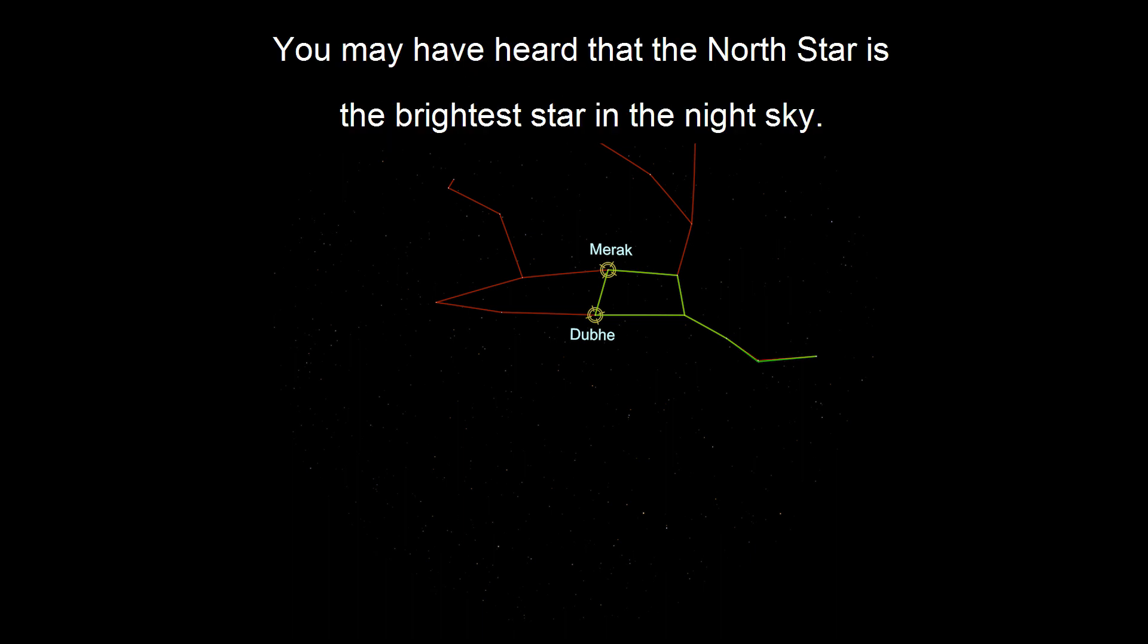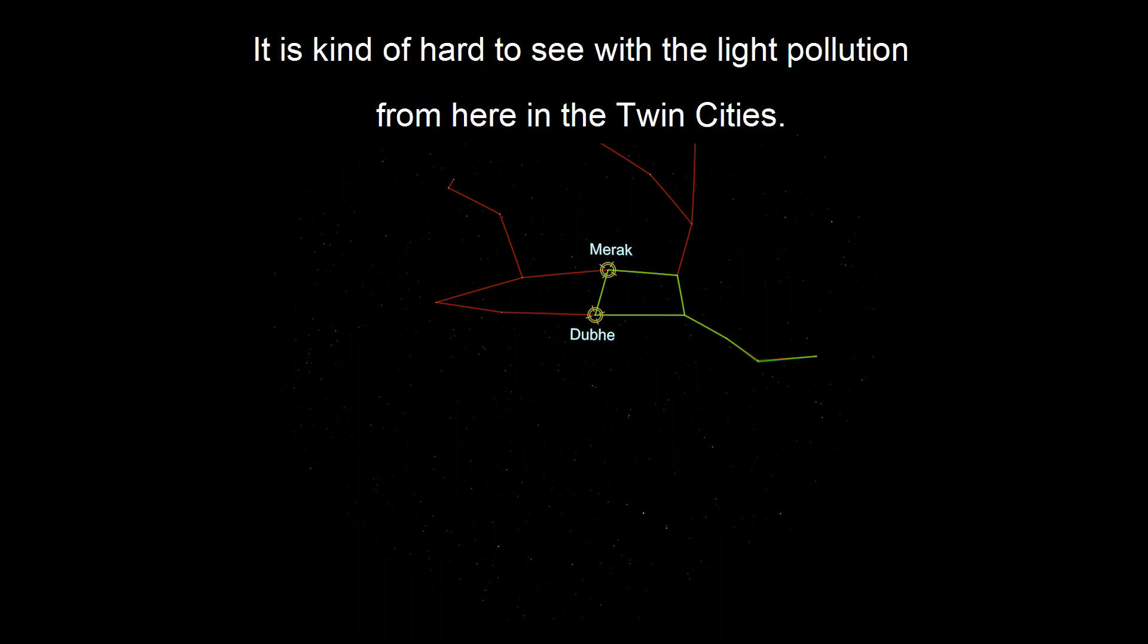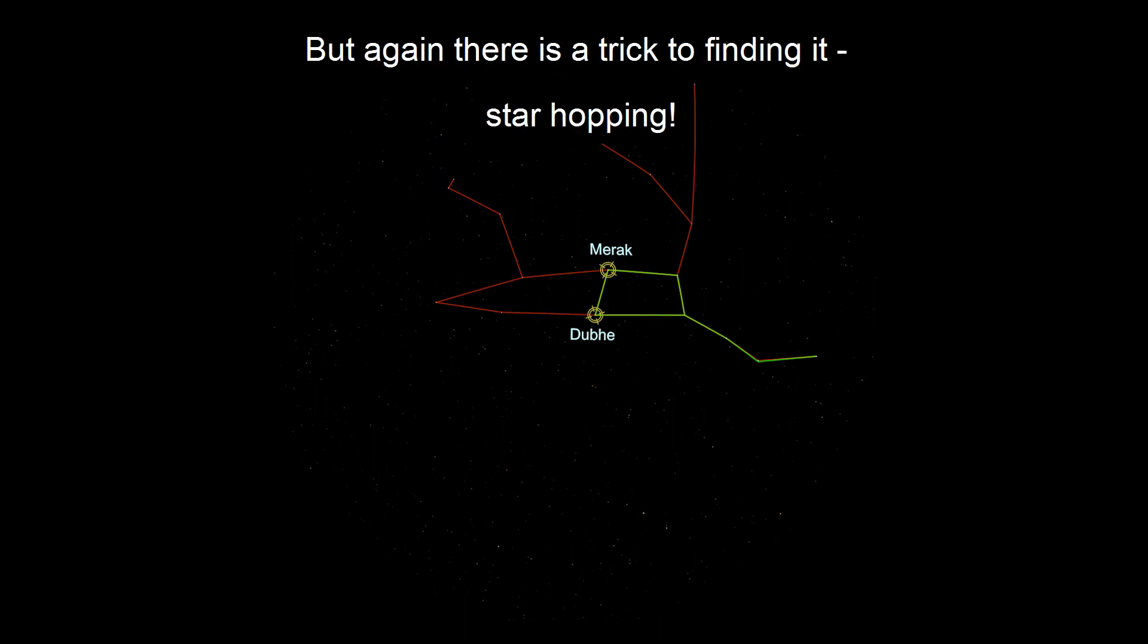You may have heard that the North Star is the brightest star in the night sky. That's actually a misconception. It's kind of hard to see with the light pollution from here in the Twin Cities. But again, there's a trick to finding it: star hopping.